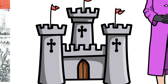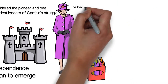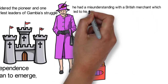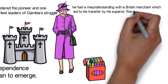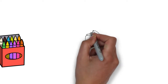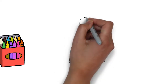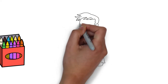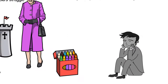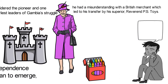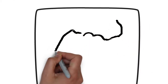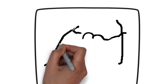While serving as a clergy in the village of Balangar, he had a misunderstanding with a British merchant which led to his transfer by his superior, Reverend P.S. Toys. Unhappy with his transfer, he criticized Reverend Toys and was then fired from the church. Feeling unfairly treated by his British superiors, this incident marked the beginning of his struggles for the liberation of the Gambia from British colonization.